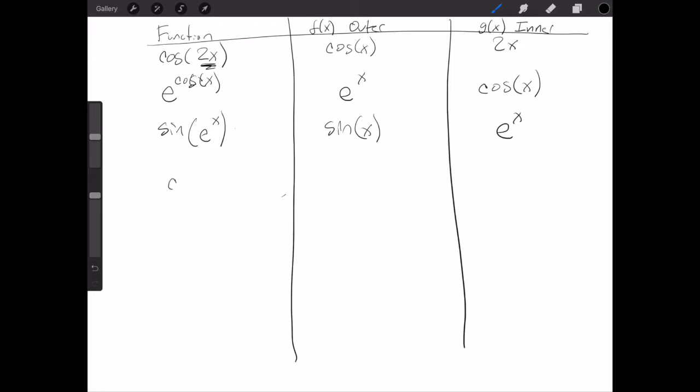We can also do other things like cosine of x to the 5th plus cosine of x to the 2nd. So in this case the outer function is actually x to the 5th plus x squared. We have a term here and a term here both of which have cosine inside so that would be cosine of x would be the inside.